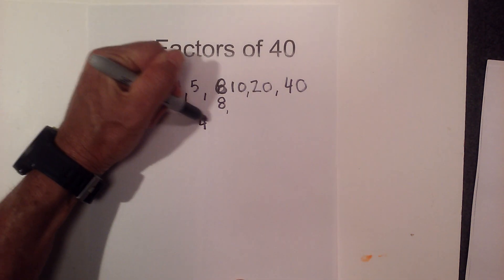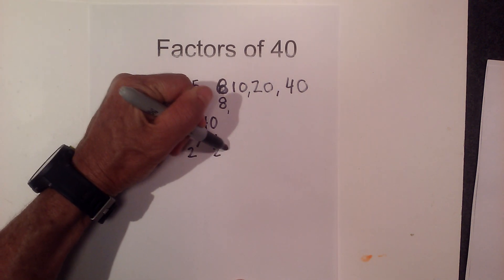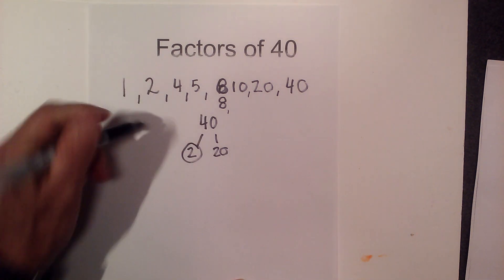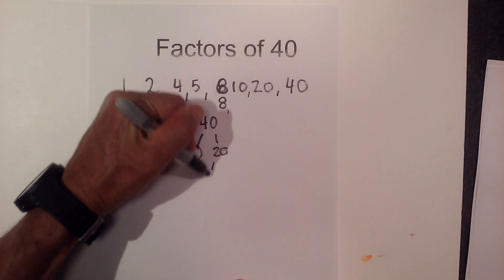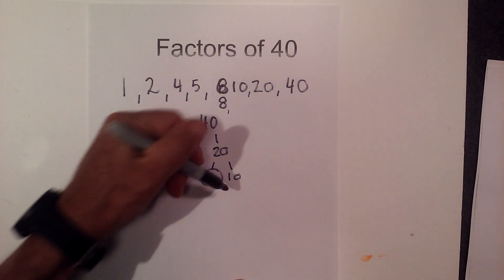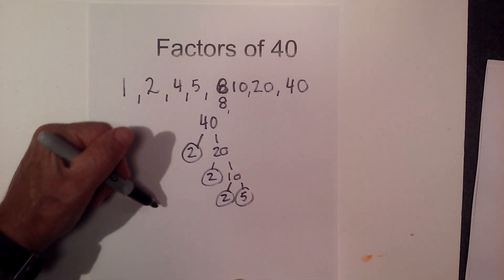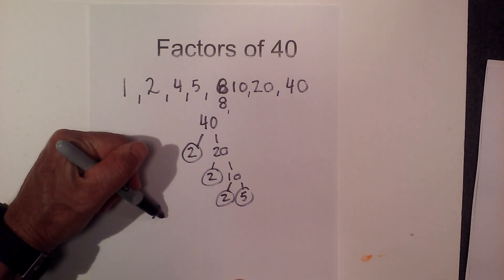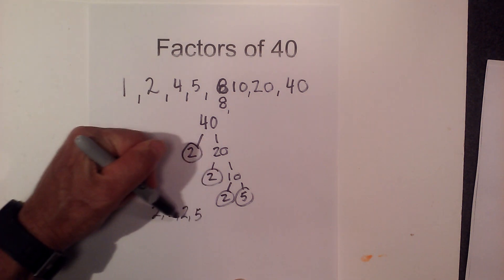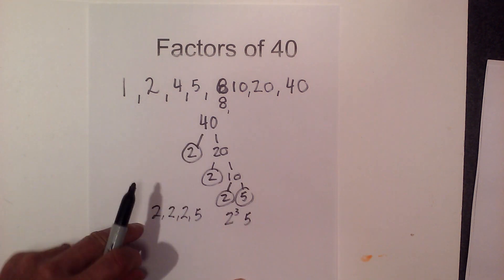Now let's find the prime factorization of 40. I like to complete a factor tree. So I have 2 times 20 equals 40 — circle the 2 because that is prime. Then 2 times 10 equals 20 — circle the 2 because it is prime. And then 2 times 5, and I'm down to prime numbers.